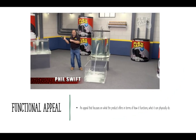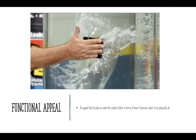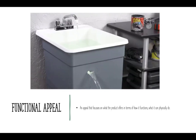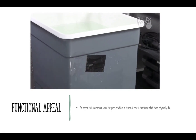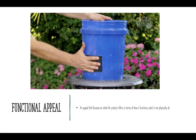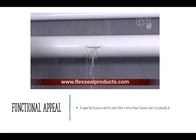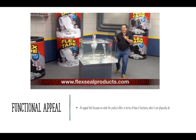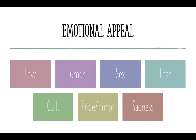Here's an example of a functional appeal — the Flex Tape infomercial: 'Hi, Phil Swift here for Flex Tape, the super strong waterproof tape that can instantly patch, bond, seal, and repair. Flex Tape is no ordinary tape — its triple-thick adhesive virtually welds itself to the surface, instantly stopping the toughest leaks. Leaky pipes can cause major damage, but Flex Tape grips on tight and bonds instantly.' The functional appeal is basically just showing the product, how it functions, what it can do. Infomercials are the most apparent at this — they show you how it's going to change your life.